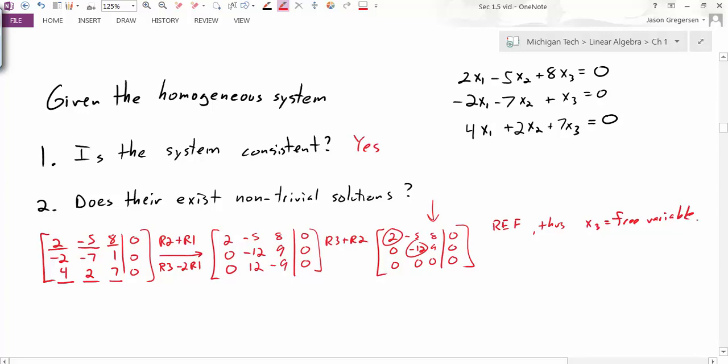So, because I know this is a consistent system, because it's homogeneous, and because I know that it has free variables, that tells me there must be infinitely many solutions. So, there are non-trivial solutions.